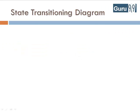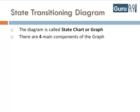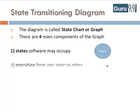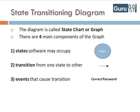This diagram is called a State Chart or State Graph. There are four main components of the graph: States that the software may occupy; Transition from one state to another; Events that cause the transition; and Actions that result from events.